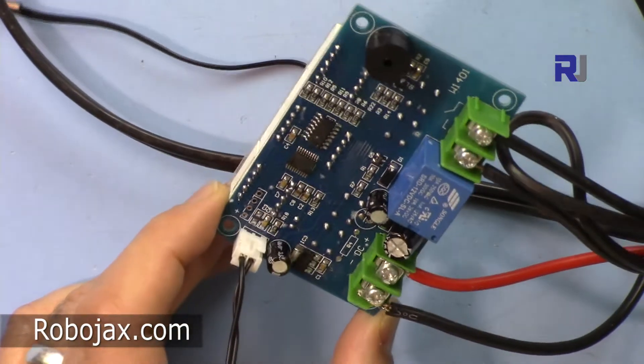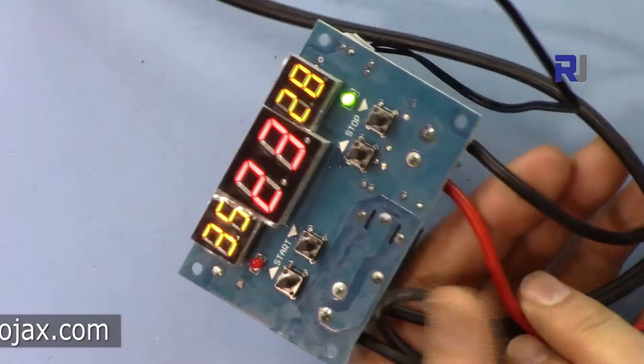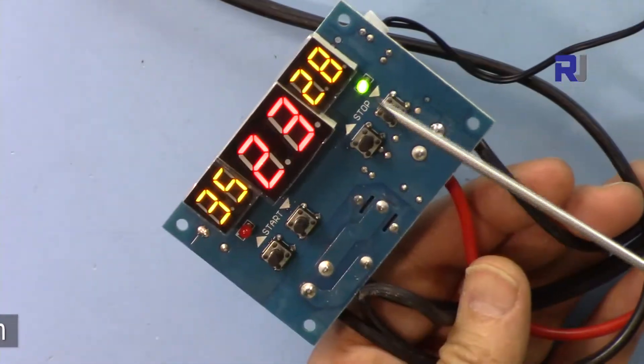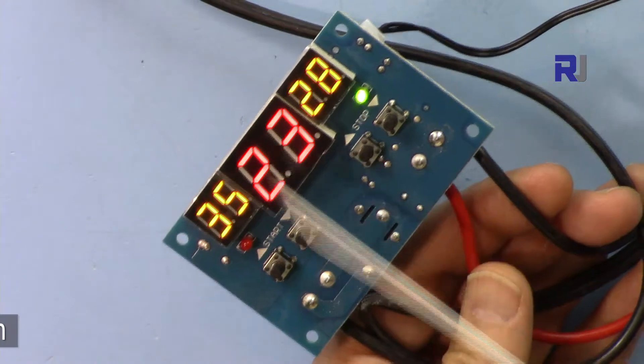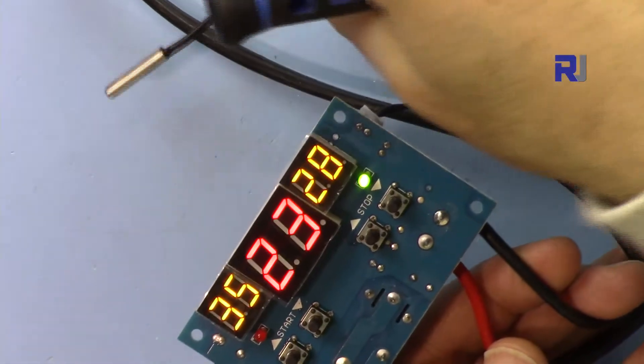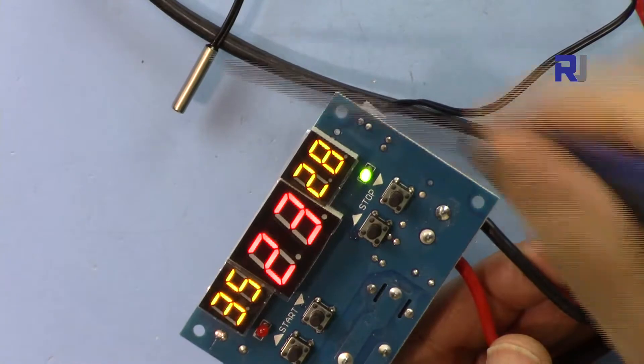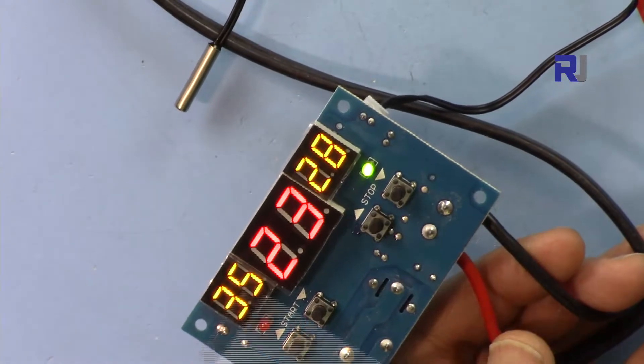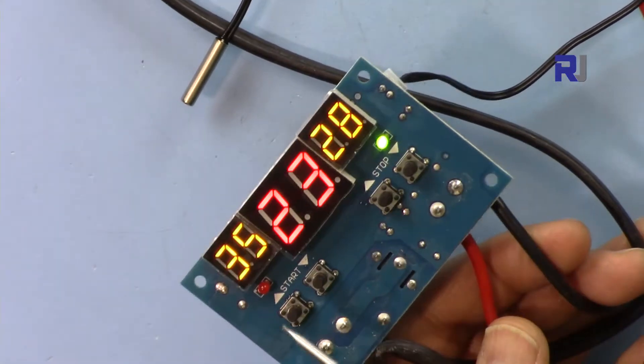On this side we have main temperature which measures the temperature of the sensor. Right now it's 23 degrees Celsius. All the temperatures are in Celsius. Here we set the start and here we set the stop.